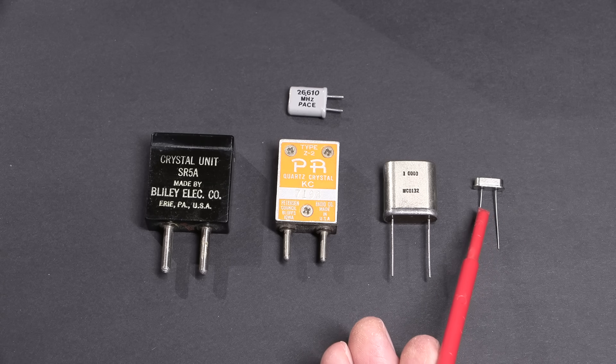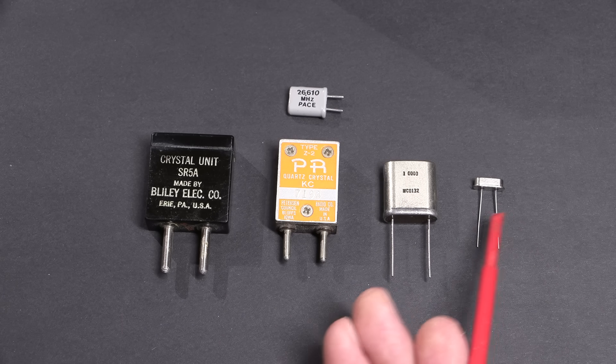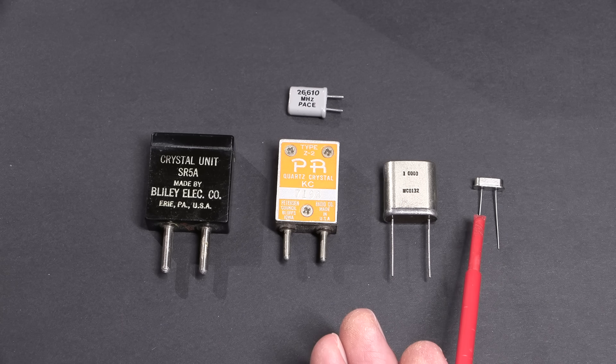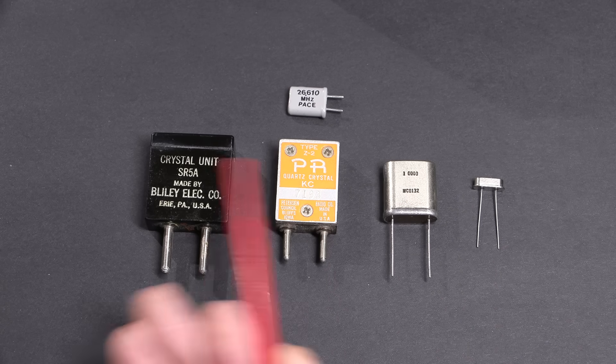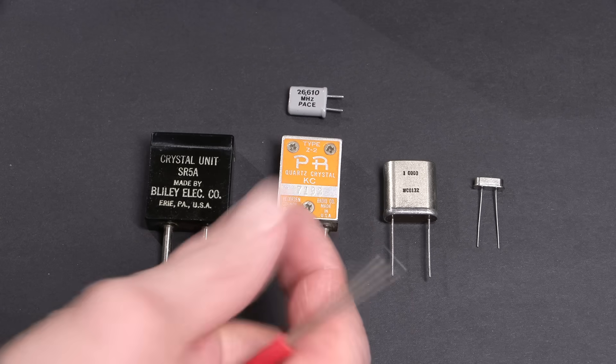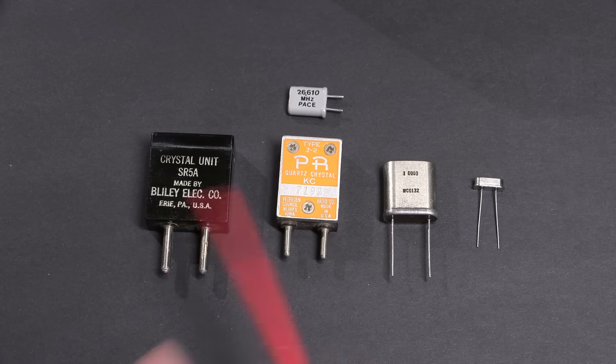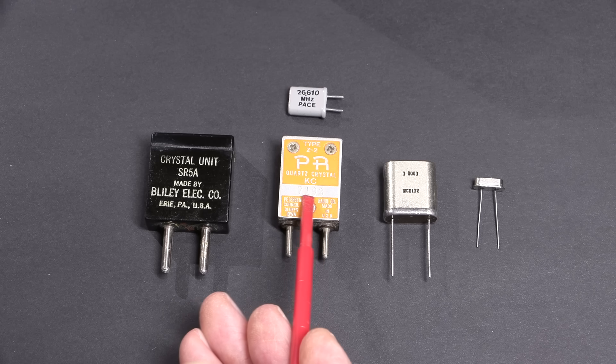Again, crystals themselves will age and they will move in frequency, but a lot of times they'll have a trimmer capacitor on the crystal itself and you can shift the frequency of the crystal just slightly by moving that trimmer capacitor. If it moves too far, you can actually take the screws out of the case, take the crystal out, clean the crystal, take the oxidization off, put it back together, and many times the crystal will come right back to the frequency it's been specified to oscillate at.